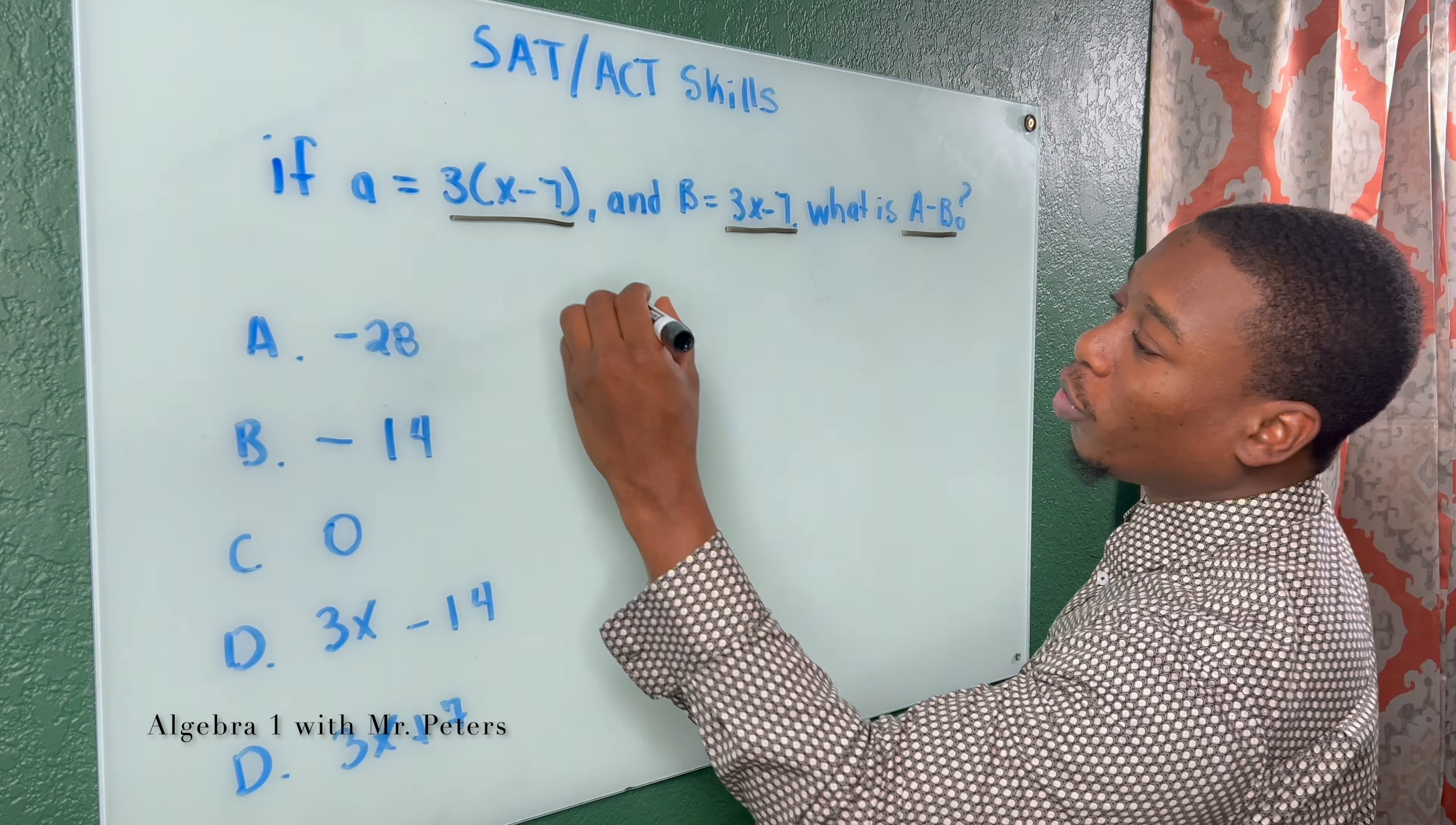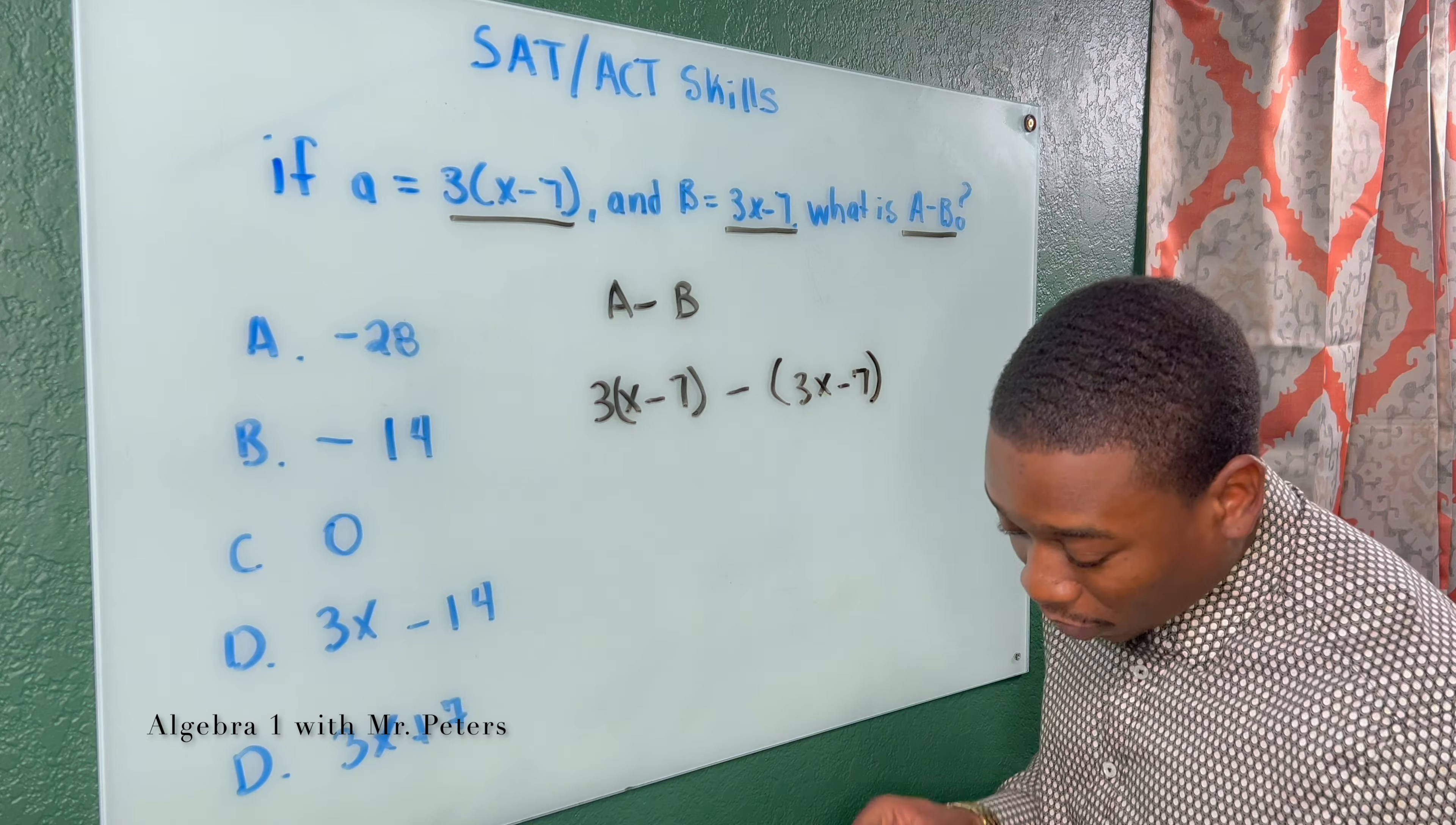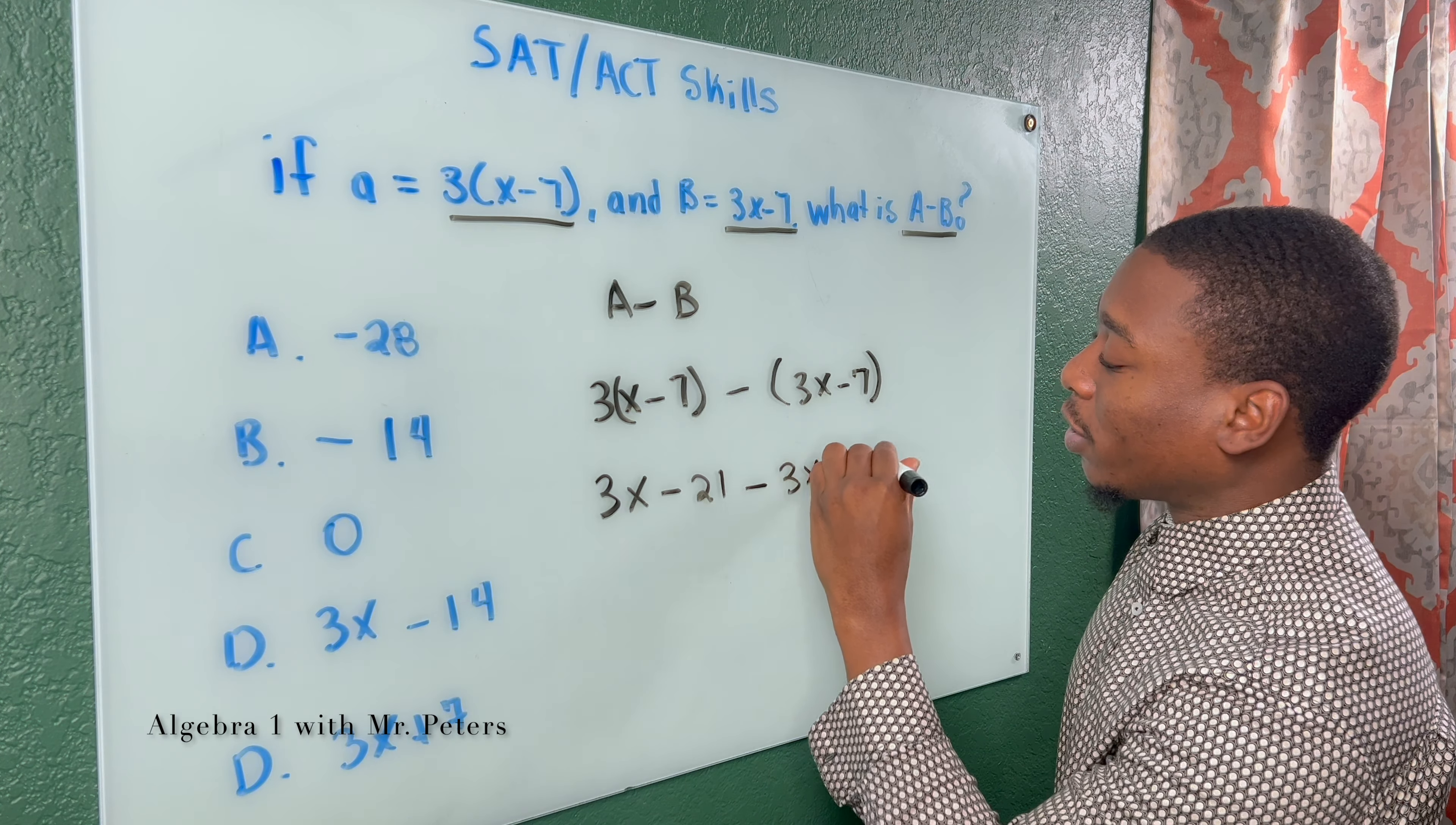So if we're doing A minus B, we're doing 3 times X minus 7 minus 3X minus 7. And the biggest thing with this problem is putting them in parentheses and separating them with a subtraction sign. So what happens is after we distribute, we have 3X minus 21 minus 3X plus 7.